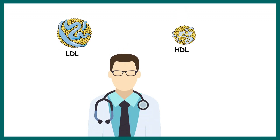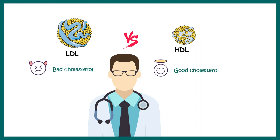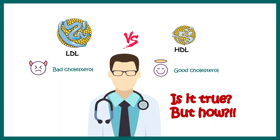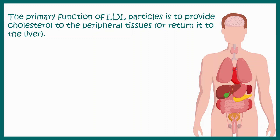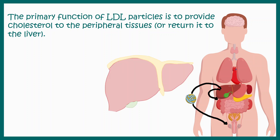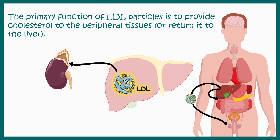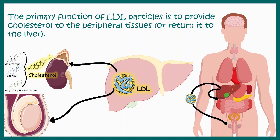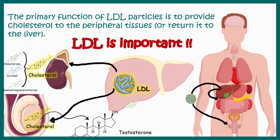Your doctor would say LDL is bad cholesterol and HDL is good cholesterol, but do you know why? The primary function of the LDL particle is to provide cholesterol to peripheral tissue, which is really useful for making hormones. For example, the liver secretes LDL which provides cholesterol to the testes and adrenal gland, where all adrenal steroid hormones — such as aldosterone and cortisol — are synthesized. In the testes, testosterone is also synthesized using that cholesterol.